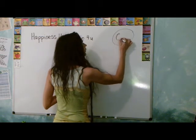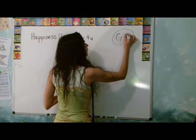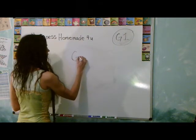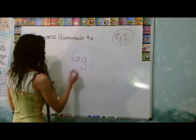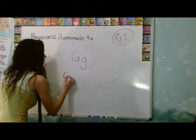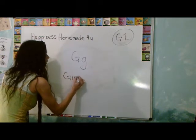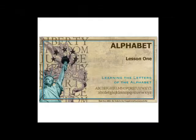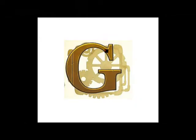This is lesson G1, capital G, lowercase g. G is for Gimlet. G-I-M-L-E-T. All right, let's go with the letter G. Lesson one, alphabet identification. Let's check out this shape.